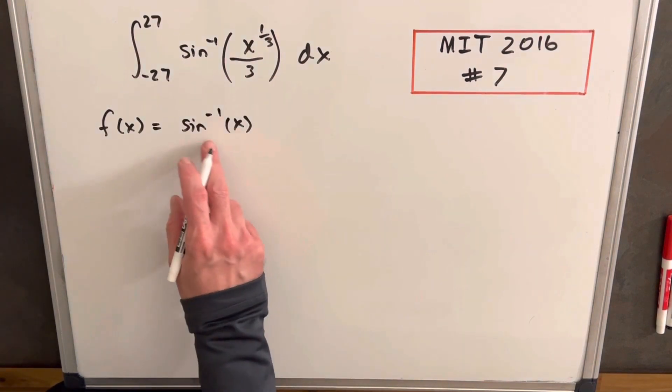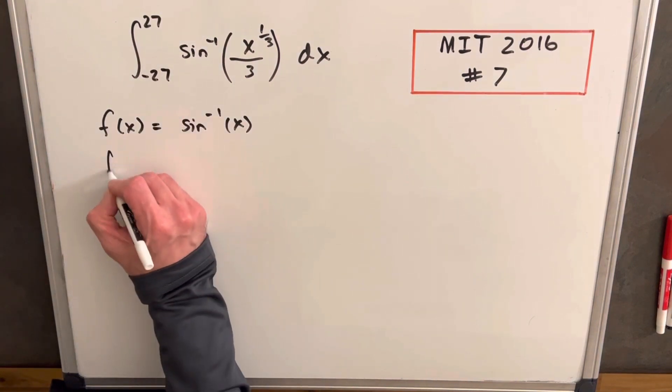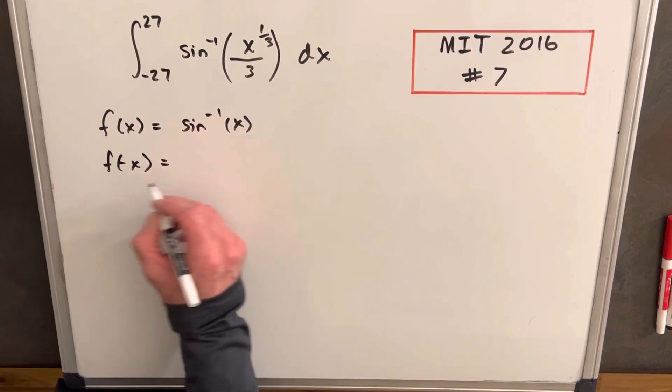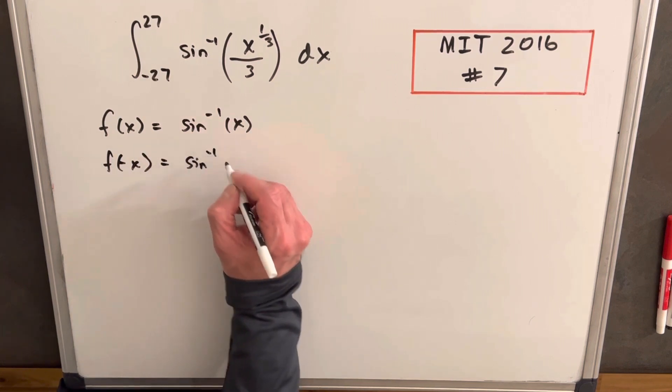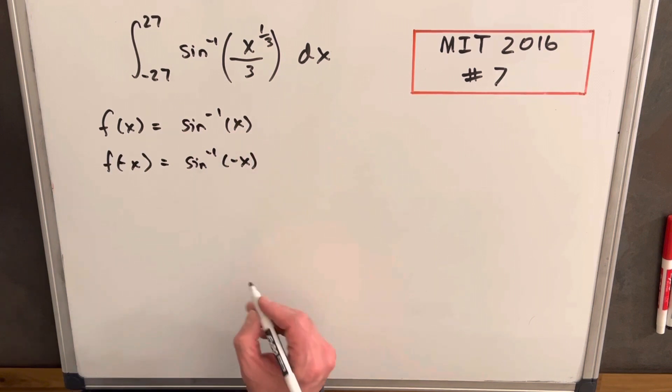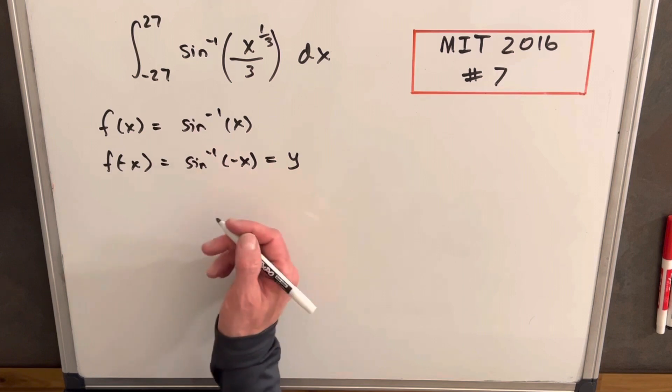So we start with our function which is going to be arc sine or inverse sine, and we just want to evaluate it at minus x. So we want to look at inverse sine at minus x, and what I'm going to do is set this equal to y.